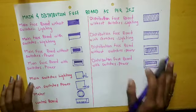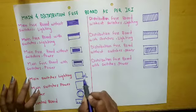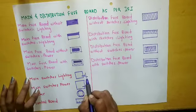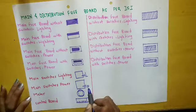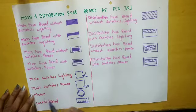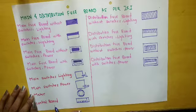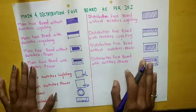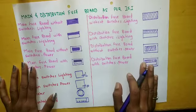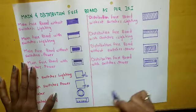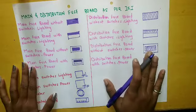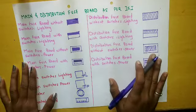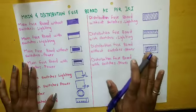Main switches lighting — this is the symbol and we write L here. Main switches power — this is the symbol and we write P here. Meter — this is the meter symbol. Control board — this is the symbol. If you have any doubts — though there shouldn't be since these are all symbols we have to remember — I will share the PDF on your group, take a look.